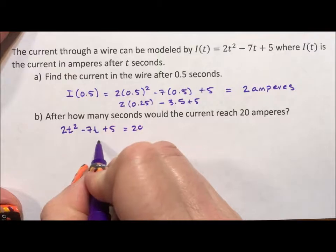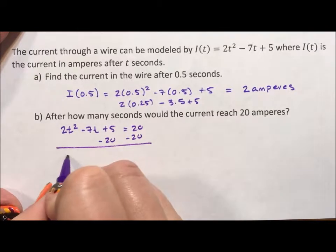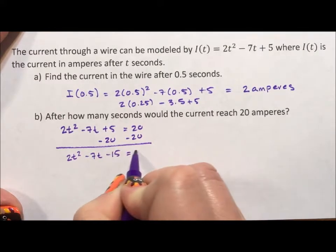Well, using the zero product property, which only works when our equation is equal to 0, we need 2t squared minus 7t minus 15 to equal 0.